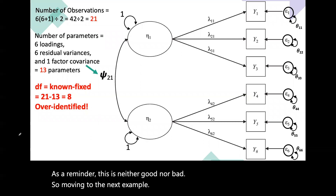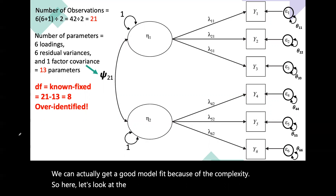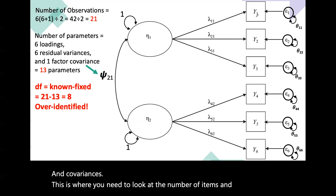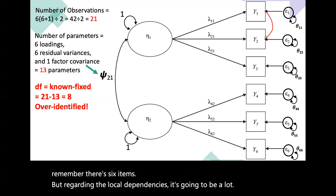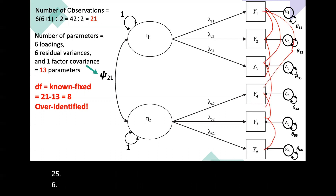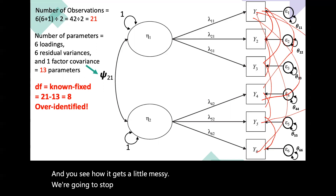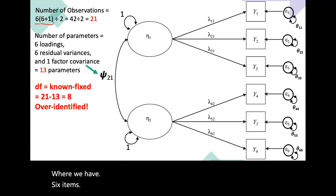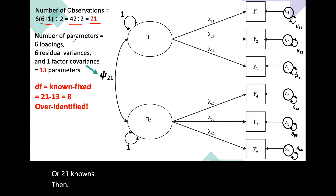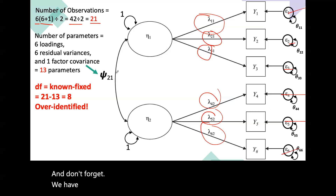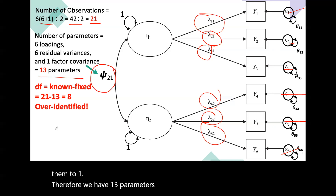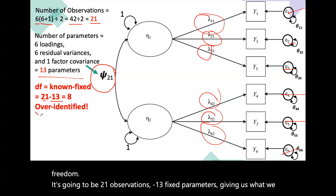Moving to the next example with six items, we can actually get a good model fit. Using our formula: six times (six plus one) divided by two gives us 42 divided by two, which is 21 known observations. For the number of free parameters: six factor loadings, six residual variances, and one factor covariance — we don't have factor variances because we fix those to one using the Z-score method. Therefore, we have 13 parameters. Degrees of freedom is 21 minus 13, giving us eight — an over-identified model, which is good times. However, if we add a cross-loading — where an item loads on more than one factor — the observations stay at 21, but our parameters increase to seven factor loadings, six residual variances, and one factor covariance, giving 14 parameters. Degrees of freedom: 21 minus 14 equals seven — still over-identified.